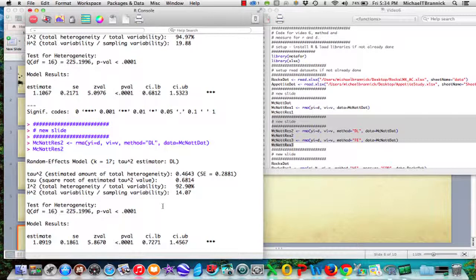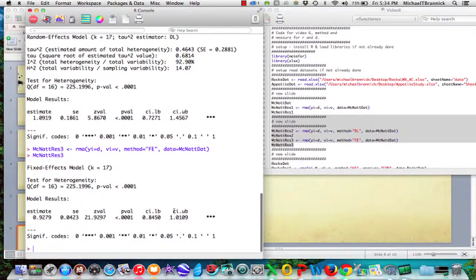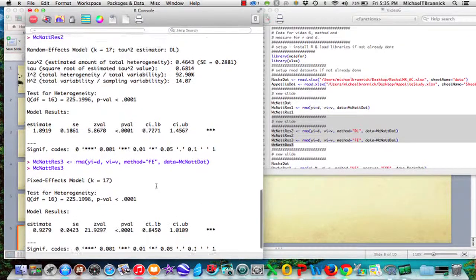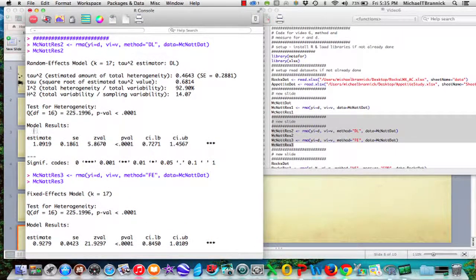But the overall effect size is similar and they're both very, very heterogeneous studies. Alright, now for the third analysis of McNatt's data I've asked it to do method equals FE or fixed effects. And you see I've got the same number of studies but this time it doesn't say whatever the estimator is because it doesn't estimate the tau squared. And its estimate is 0.93 and has a confidence interval from about 0.85 to 1.01. So when you run the fixed effects you really lose the idea that you have tremendous heterogeneity.